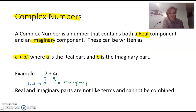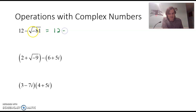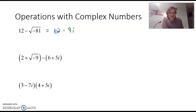Let's see if we can write some things in the form A plus Bi. Here I have 12 minus the square root of negative 81. I'm going to rewrite that as 12 minus the square root of negative 81. The square root of 81 is 9, and because of the negative it would have an i, so it would look like 12 minus 9i. Here 12 is the A, and negative 9 is the B.